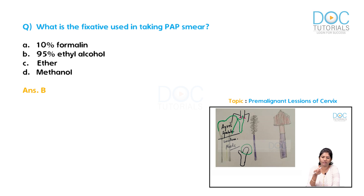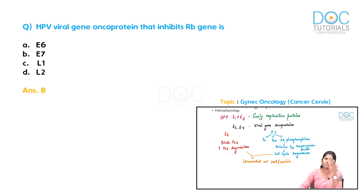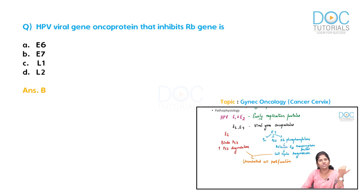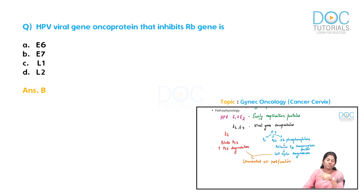We have four important viral oncogenes: E1, E2, E6, and E7. E1 and E2 are early replication proteins that help in the replication process. E6 and E7 are actual viral oncoproteins. E6 binds to p53 and increases its degradation — since p53 is a tumor suppressor gene, this leads to uncontrolled cell proliferation. E7 activates retinoblastoma gene phosphorylation, increasing E2F transcription factor activity, also causing uncontrolled cell proliferation.